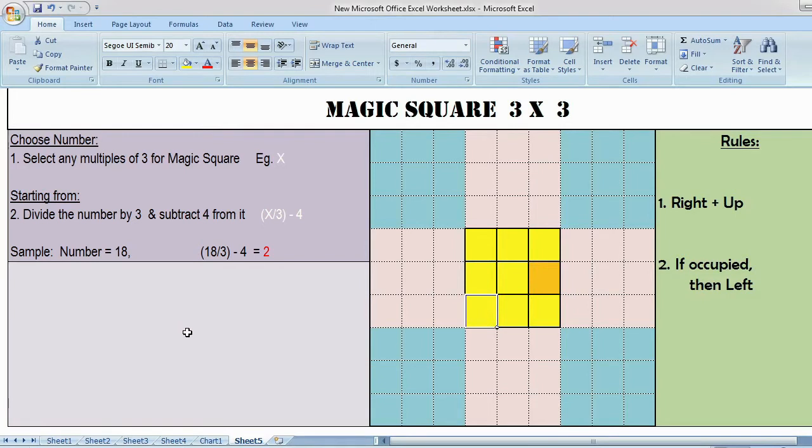Now I am going to choose a number. Always select any multiple of 3 for a magic square. For example, we will consider the number 18. The rule to start with is divide the number by 3 and subtract 4 from it. 18 by 3 is 6 minus 4 equals 2, the starting number.